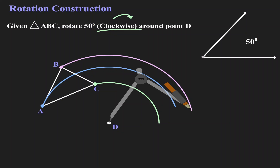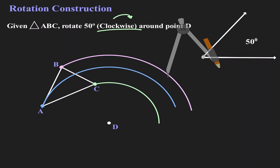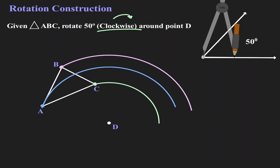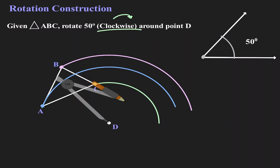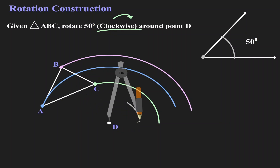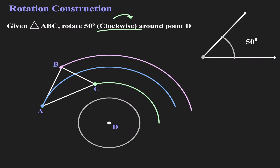Now that we have the arcs of rotation that each of those points are going to follow, let's build our angle of reference. Let's get our compass and put my metal leg at the vertex of the angle, and we want to create an arc which we're going to use as our angle of reference. Using the length of this arc and without changing the length of my compass, I'm going to put my metal leg back at D and create a circle using the measurement for the arc we just did for 50 degrees. I'm going to call this circle my angle of reference.